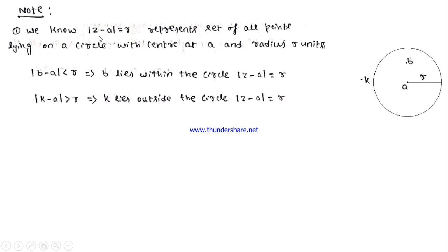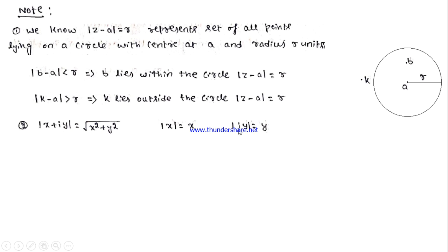The modulus of x + iy is given by √(x² + y²). Modulus of x is just x, and modulus of iy is y, because the real part is 0 and √(y²) = y.